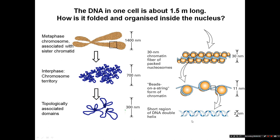The first level of folding is when the DNA is wrapped around balls of proteins — these are histone proteins — and the DNA is wrapped twice around the outside of each ball to form a nucleosome. A string of nucleosomes is often called the beads-on-a-string form of chromatin, or the 10 nanometer fiber.